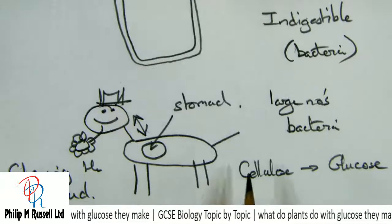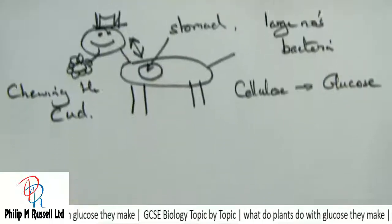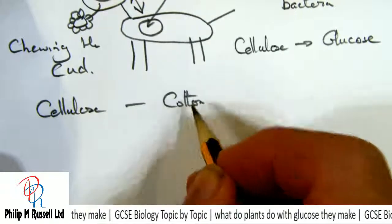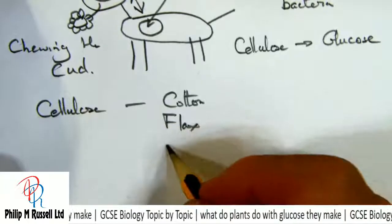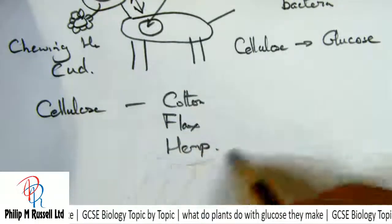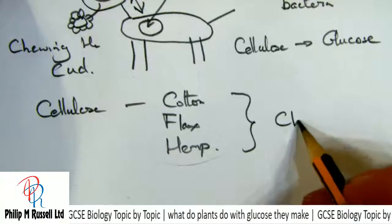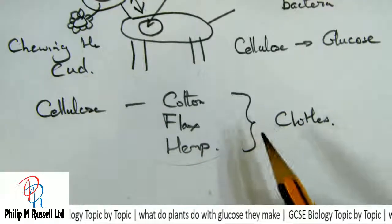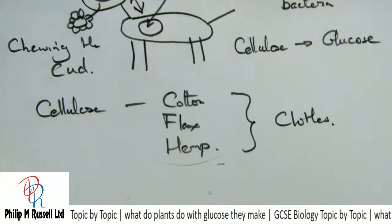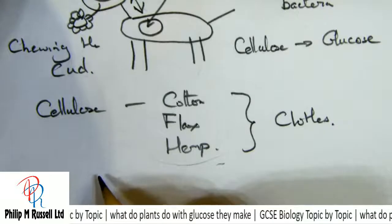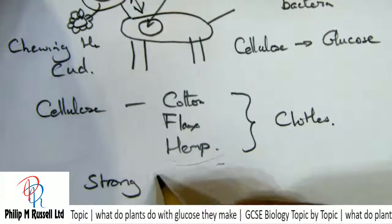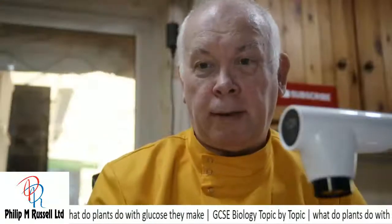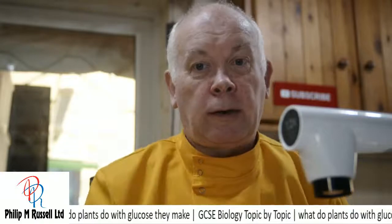Cellulose is a really strong material. We know it's strong because it's used to make things like cotton, flax, and hemp — all different plants whose fibres make our clothes. It is very strong, indigestible, and it's what keeps a plant held together and why we can use it for clothes and other things.